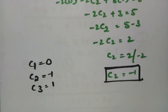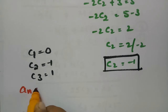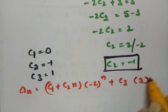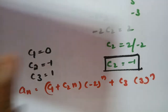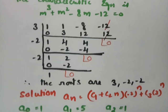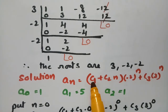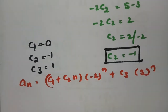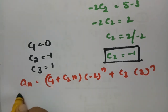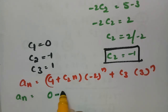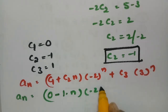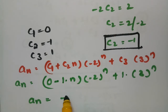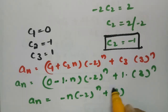Looking at the general solution: a_n equals (c1 plus c2*n) times (minus 2)^n plus c3 times 3^n. Substituting c1 equal to 0, c2 equal to minus 1, and c3 equal to 1, the final solution is: a_n equals minus n times (minus 2)^n plus 3^n.